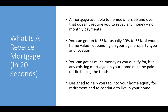Before I get started, as I do at the start of every video, I'm going to walk you through what a reverse mortgage is in 20 seconds. It's a mortgage for homeowners 55 and over. It doesn't require any repayment. You can get 10 to 55% of your home's value depending on age, property, and location. You can take as much money as you like, but you must pay off any existing mortgage on your home first. It's designed to help you tap into your home equity for retirement and continue to live in your home for the rest of your life.